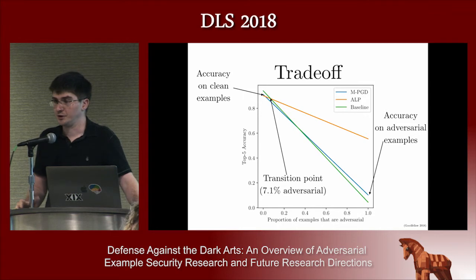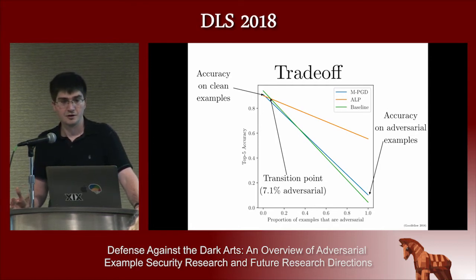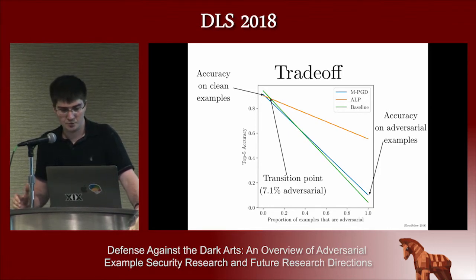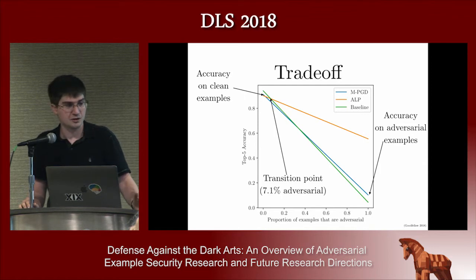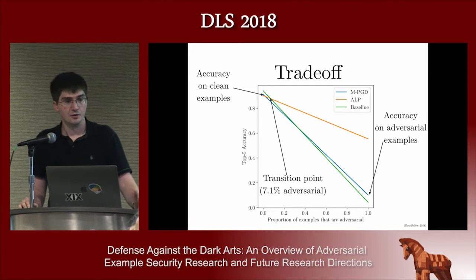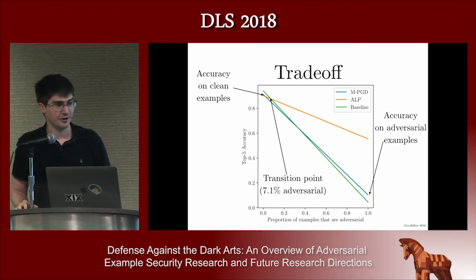The way we should think about this is to consider the composition of the actual test set the model will encounter when deployed. Usually in ML literature, the test set refers to clean IID data from the same distribution as training — that's probably not what the model will actually encounter at deployment. So how you evaluate your model depends on what you think it will see at deployment time. Benchmarking purely on adversarial error rate assumes an adversary is present on every single input, which is probably not realistic.